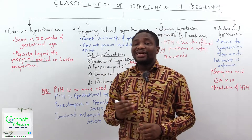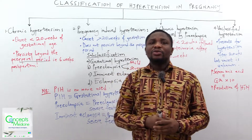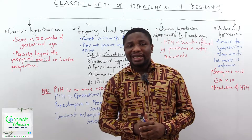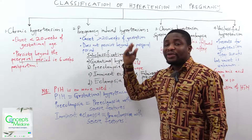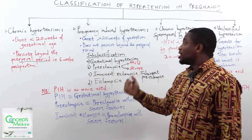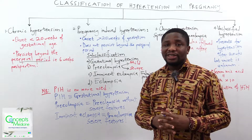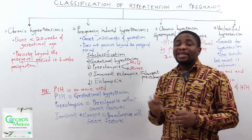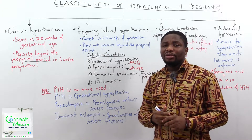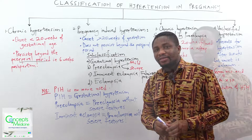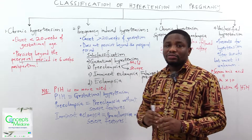Let's talk about pregnancy-induced hypertension in the old style, and then we'll note the new guidelines. For pregnancy-induced hypertension, the onset is going to be after 20 weeks of gestation. But pregnancy-induced hypertension does not persist beyond the puerperal period — that is, six weeks postpartum. It can be subclassified into the following categories.